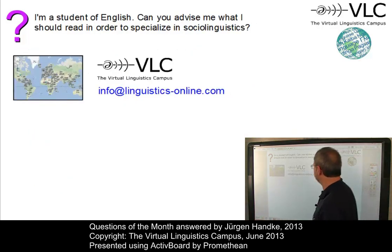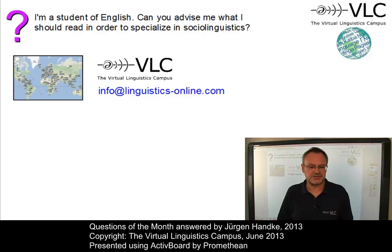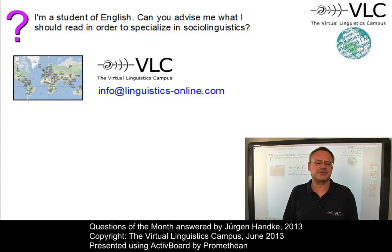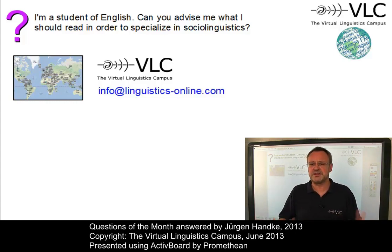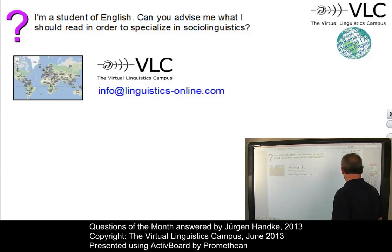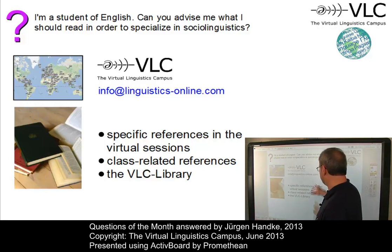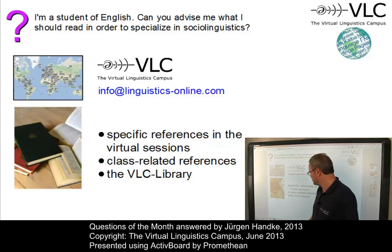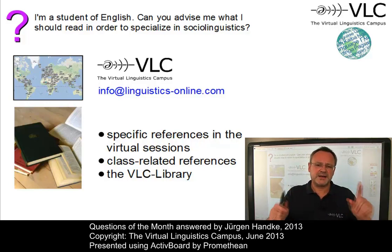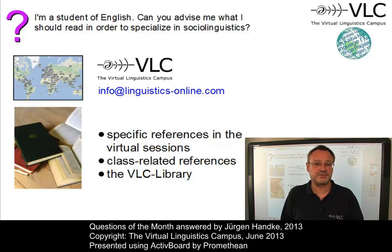And here is another request for literature references, this time in sociolinguistics. As I mentioned in previous Questions of the Month videos, our policy is quite straightforward: we do not list literature references in a video — you would have to pause, identify the references, copy them and eventually get them. But on the Virtual Linguistics Campus, literature references are given in three ways: specific references in the virtual sessions, class-related references via the bibliography link of a class, and the VLC library. Unlike in a video where, once recorded, the references are permanent, on the Virtual Linguistics Campus we can easily update the references when necessary. So become a member of the VLC and you have the references you need.